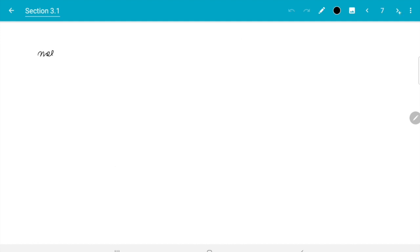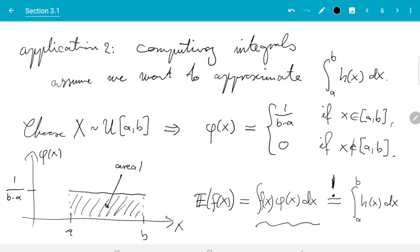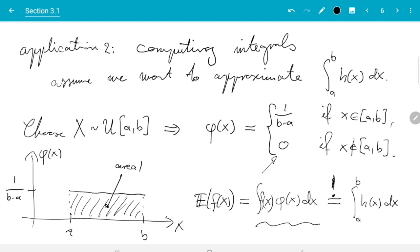Let's write this. So we need f(x) times phi(x) equals h(x). And we know what phi(x) is. So that is f(x) times indicator function [a,b] times 1 over b minus a. I use the indicator function to get this 0 case right here. So that is f(x) times phi(x).